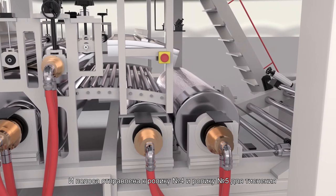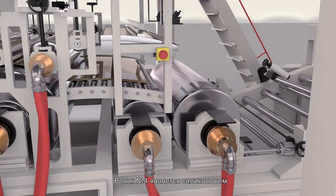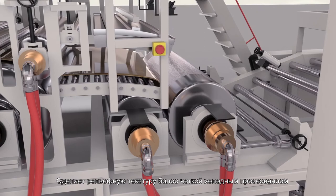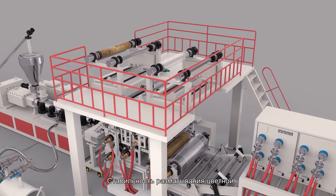Then, same to number 4 roller and number 5 roller for embossing. Number 4 roller is made of silicon rubber, which will make the embossing texture clear by using the method of cold pressing. The stability of color film unwinding is the key to the rate of final products.